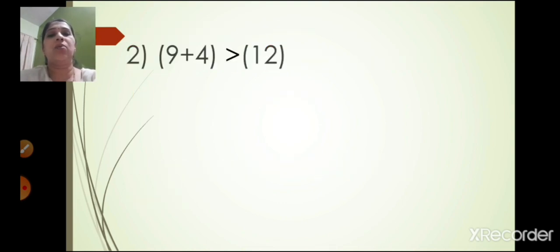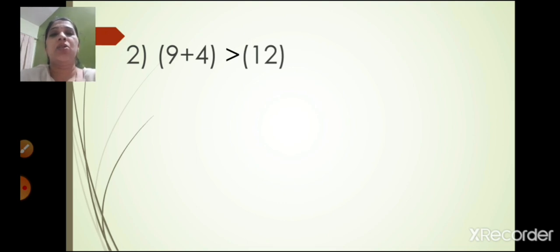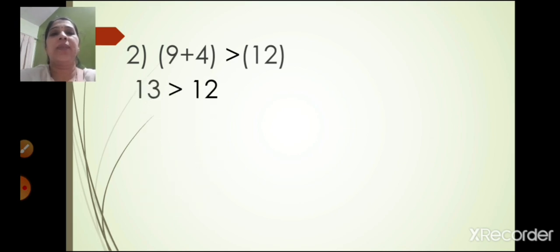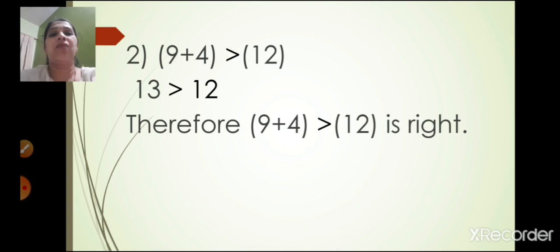The second one: 9 plus 4 is greater than 12. Now what is 9 plus 4? It is 13. So 13 is greater than 12 — 13 is larger than 12. Therefore 9 plus 4 is greater than 12 is right.